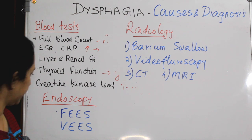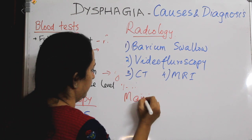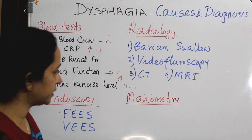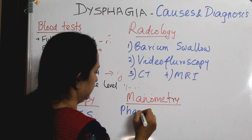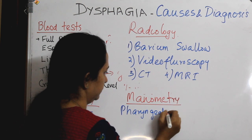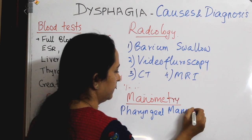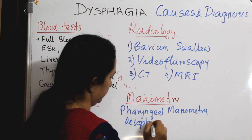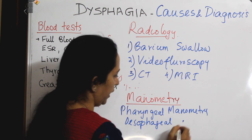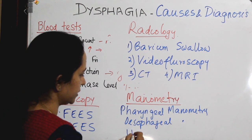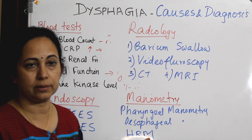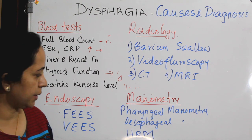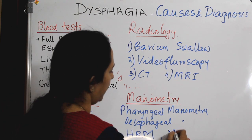The next investigation is manometry. Under manometry, you have pharyngeal manometry and esophageal manometry — these are conventional. The newer one is HRM, high resolution manometry, which is usually asked in DNB and postgraduate examinations as a recent advance. There are also many variations of HRM, as well as manofluoroscopy.